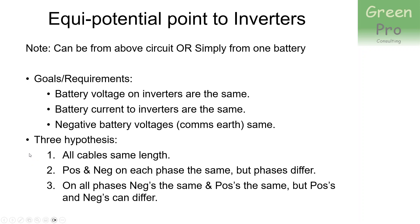There are three hypotheses - three ways people believe you can connect the cables. Hypothesis one: make all cables the same length. Hypothesis two: the positive and negative on each phase must be the same, but the phases differ. Hypothesis three: on all phases, the negatives must be the same and the positives must be the same, but the positives and negatives can differ from each other.